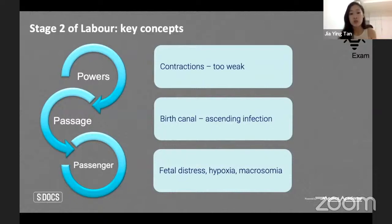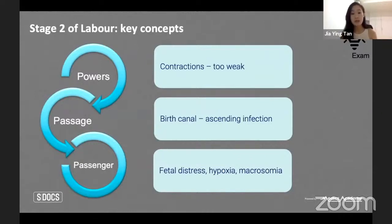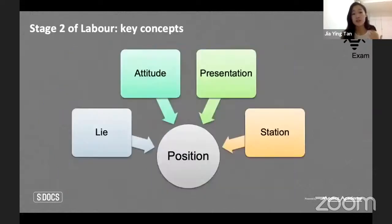The three P's can also categorize abnormal labor. Inadequate contractions (too weak) can be treated with drugs to increase their power. Passage problems include ascending infections like herpes simplex virus, which are very harmful to the fetus. For the passenger, fetal distress is assessed through cardiotocography (CTG) monitoring fetal heart rate, as well as fetal hypoxia (insufficient oxygen, which can cause brain damage) and macrosomia (the baby being too large).